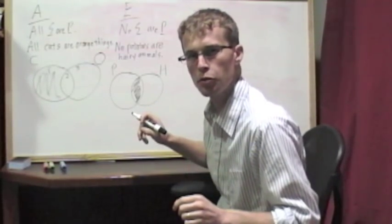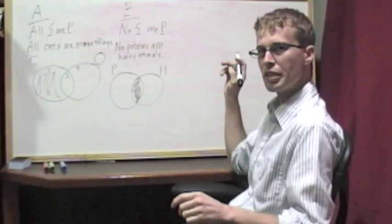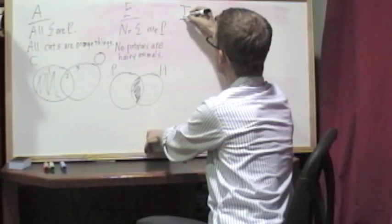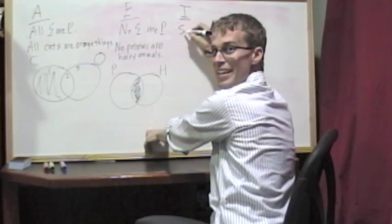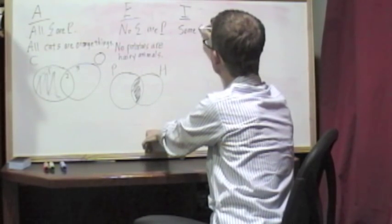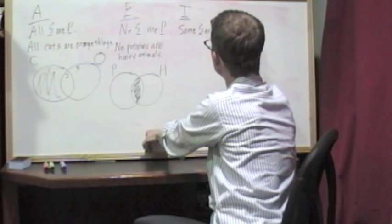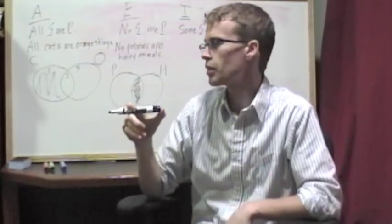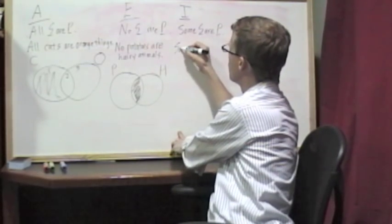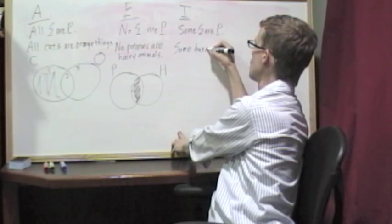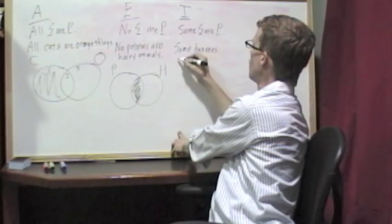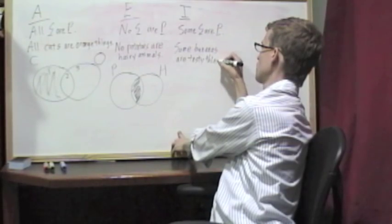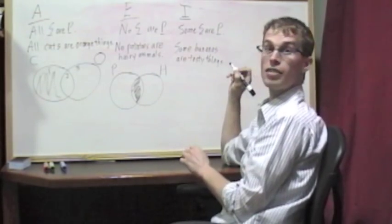Now, if we move on to our partial claims, we're going to be doing something a little bit differently. An I claim is at some S are P. It might be something like some bananas are tasty things.